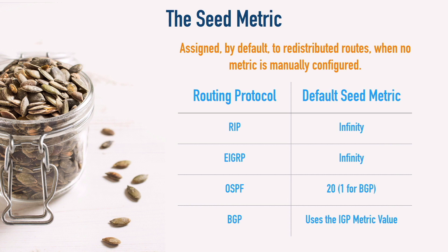Here we see some of those seed metrics. Looking at the table, we can see that by default, a route redistributed into OSPF will be assigned a metric of 20, unless that route is being redistributed into OSPF from BGP — in that case it's going to be given a metric of 1. Interestingly, both RIP and EIGRP have a default seed metric of infinity, meaning that a route redistributed into those routing protocols will be considered unreachable by default. So when we're redistributing into RIP and EIGRP especially, we want to manually configure what metric gets assigned to those routes.